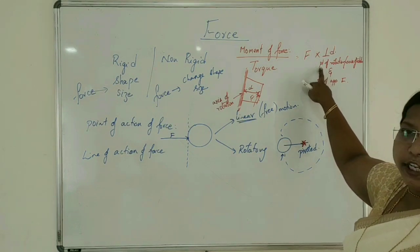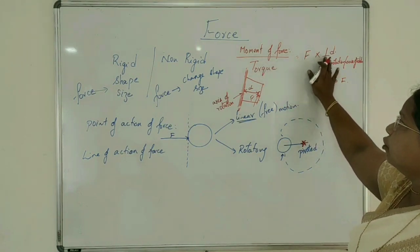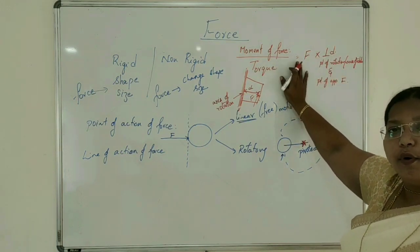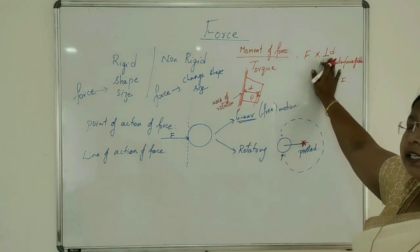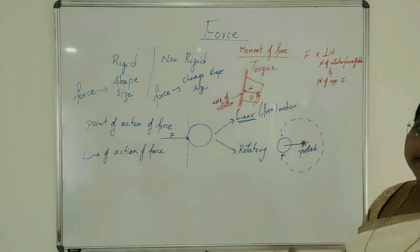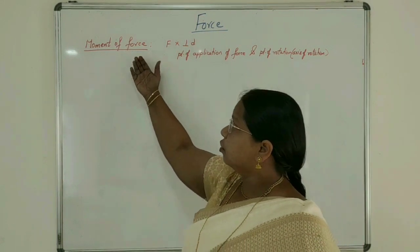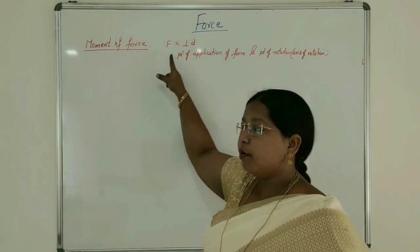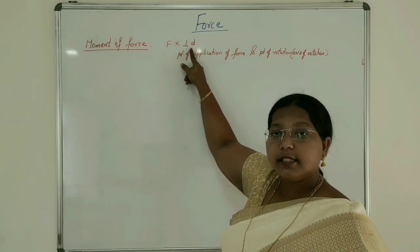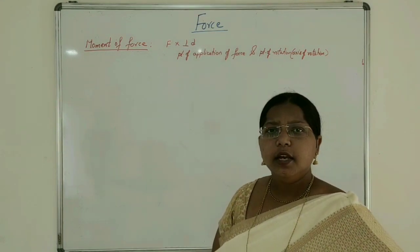Moment of force is force multiplied by perpendicular distance, and the perpendicular distance is the distance between the point of application of force and the point of rotation. Let me give you one example: there is a rod fixed to a point. When pivoted, by the application of force, it starts rotating.